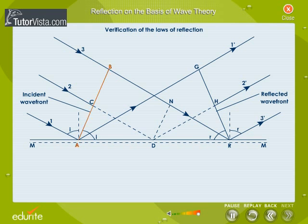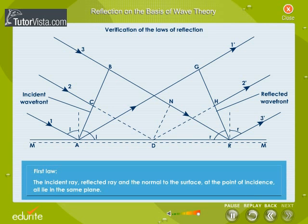But the normals to AB and RG are the incident ray and the reflected ray respectively. Hence, it can be stated that the incident ray, reflected ray and the normal to the surface at the point of incidence all lie in the same plane. This proves the first law of reflection.